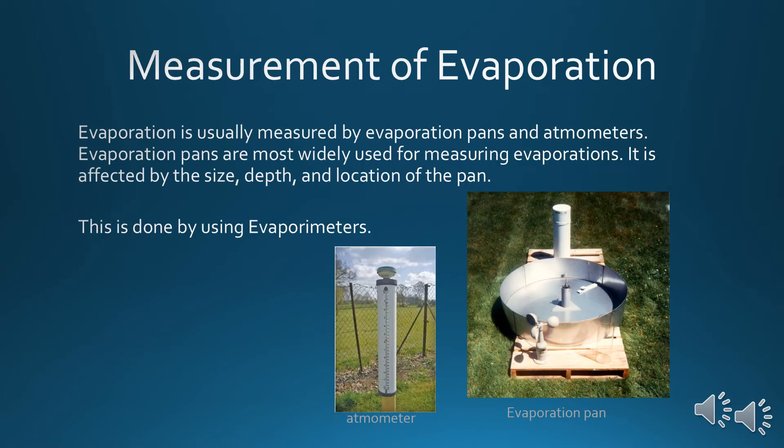Evaporation is usually measured by evaporation pans and atmometers. Evaporation pans are most widely used for measuring evaporation. It is affected by the size, depth, and location of the pan. This is done by using evaporimeters.